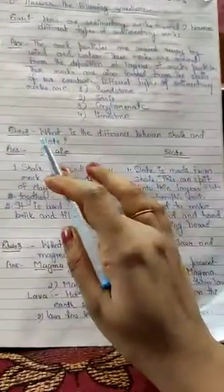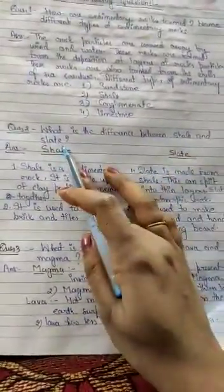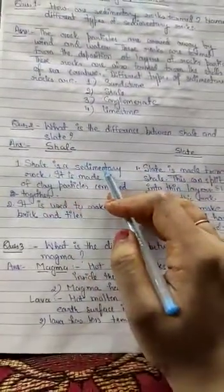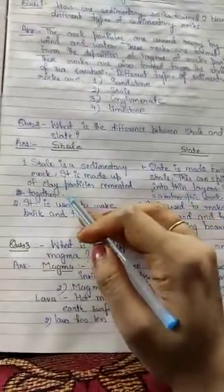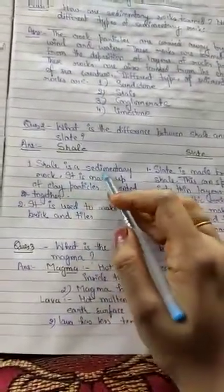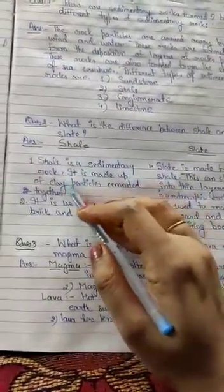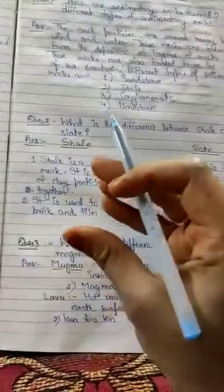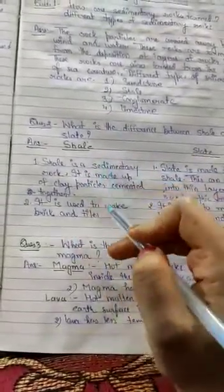Now, second question. What is the difference between shale and slate? Shale is a sedimentary rock. It is made of clay particles cemented together. Shale is a kind of sedimentary rock and it is made from clay particles. Clay particles when cemented together, cemented means joined together, they form sedimentary rock.